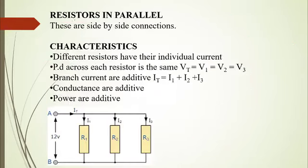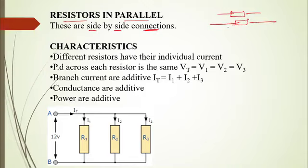Now we'll talk about resistors connected in parallel. While resistors in series are end-to-end connections, resistors in parallel are side-by-side connections. They look somewhat like this diagram shown. These are the positive and the negative terminals. Alternatively, you can redraw them in this other method.